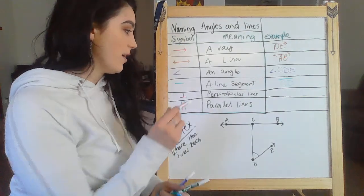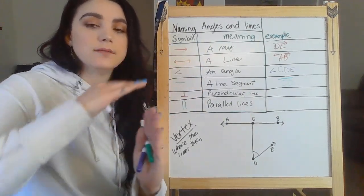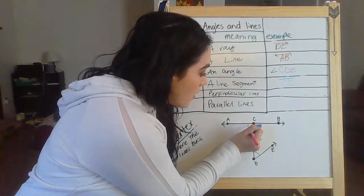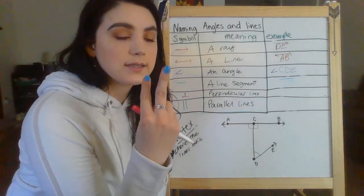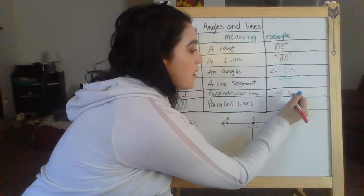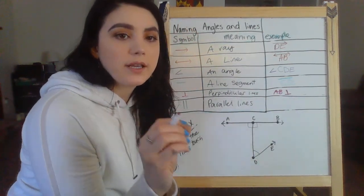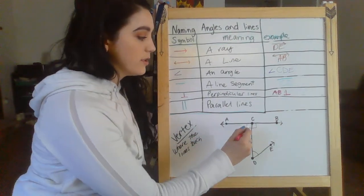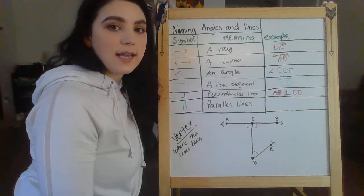Now we have our new vocabulary. Perpendicular is where two lines come together to make right angles. They could cross all the way, they could come partially, they could come on the side, but either way where they come together, they need to make a right angle. So if we look at this, there are some right angles right here. We're going to name two sets of lines. So we have line AB is perpendicular to line CD, because this line and this line intersect to make right angles.